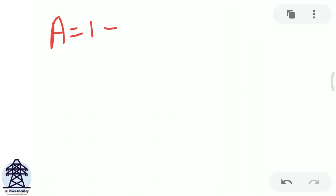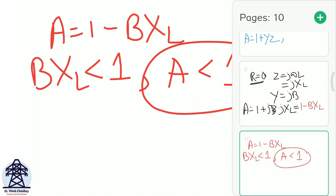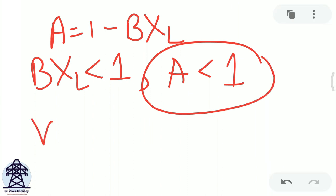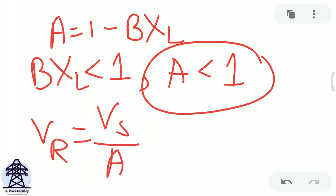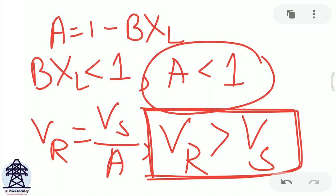Since B·XL is positive and less than 1 in a practical line, A = 1 − B·XL is less than 1. Since VR = VS / A and A < 1, VR is greater than VS. This is the Ferranti effect: under no-load or light-load conditions, the receiving end voltage exceeds the sending end voltage. The term (1 − B·XL) is always less than 1 in practice, which proves this mathematically.